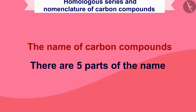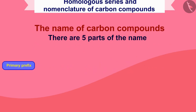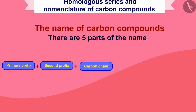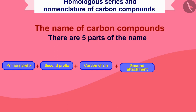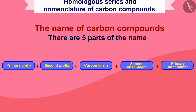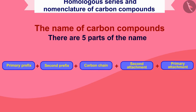Let us know what those five parts are. The first part is the primary prefix. Then comes the second prefix. Then comes the carbon chain. Then comes the second attachment, which joins behind the name. And then comes the primary attachment. In this way, the name of our carbon compound is divided into five parts.